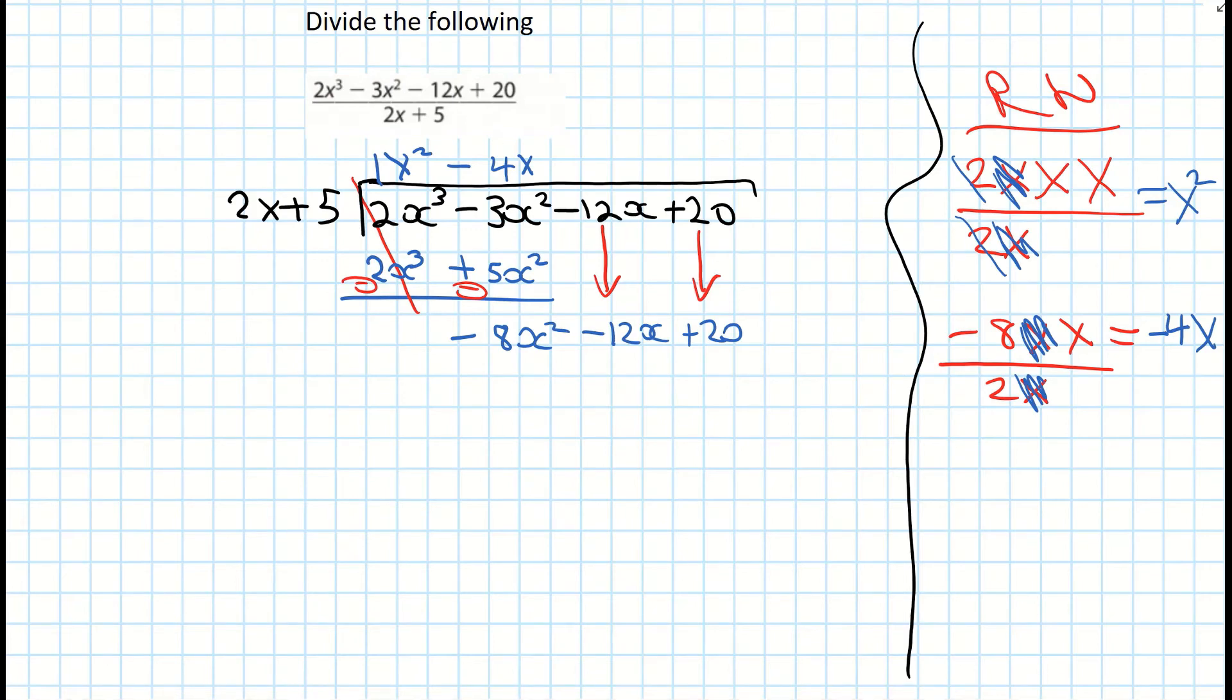We now have to multiply that back down. So minus 4x by 2x gives us minus 8x squared. And then minus 4 by positive 5 is giving us a minus 20x. And I've just lost it from the top. What was it there? Minus 4x I think. Yep. Okay.